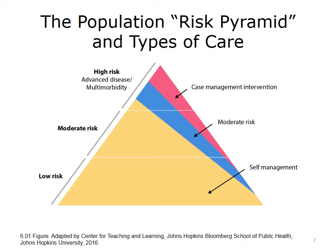Throughout this presentation, we'll use various pyramids. These are population pyramids that array everyone in a community, everyone in a target population — say within an accountable care organization, ACO, or integrated delivery system — into one or more risk levels. The pyramid arrays a population from low to high: low risk, moderate risk, high risk, advanced disease, or multiple diseases.